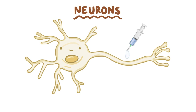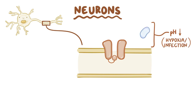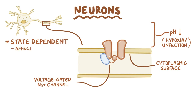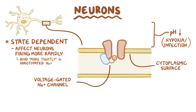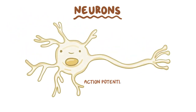Once the anesthetic reaches the neurons, it will go inside the cells. However, if the pH in the surrounding tissue is low — like in hypoxia or infection — some of the medication will become ionized and won't be able to cross the cell membrane. Once inside the cell, the medication binds to voltage-gated sodium channels on the cytoplasmic surface. Local anesthetics are state-dependent, meaning they're more likely to affect neurons that are firing more rapidly, because they bind more tightly to inactivated sodium channels and prolong the inactivated state, preventing the action potential from traveling up the axon.